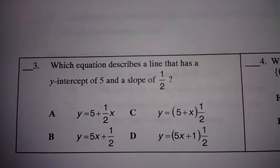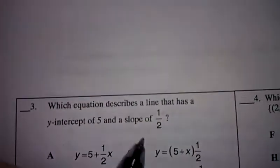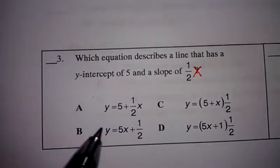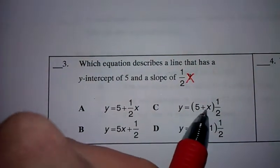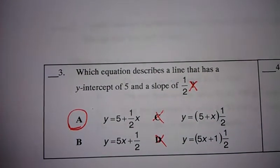Number 3. Which equation best describes a line that has a y intercept of 5 and a slope of x? The slope is going to have an x next to it. Let me see this right here, nope that goes in parentheses and that's not it. D is not it. Your answer should be A.